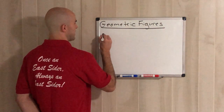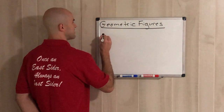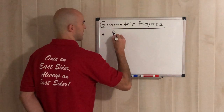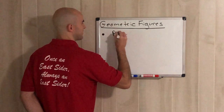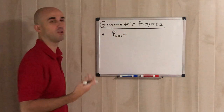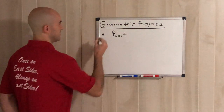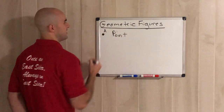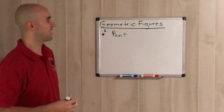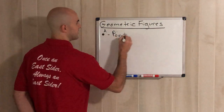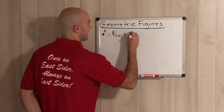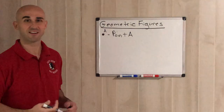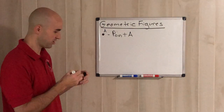The most basic figure would be a point. All a point is — a lot of people call it a dot — it's just an exact point. So if you were to see something like this, that would literally be called point A. That's all a point is, just a point that has a label for it.